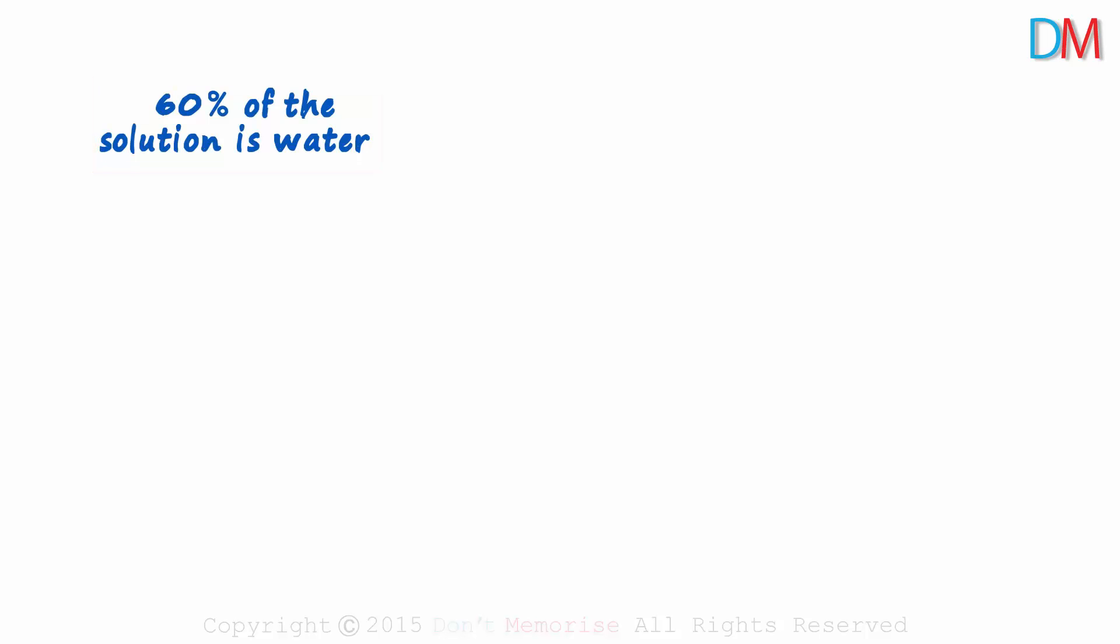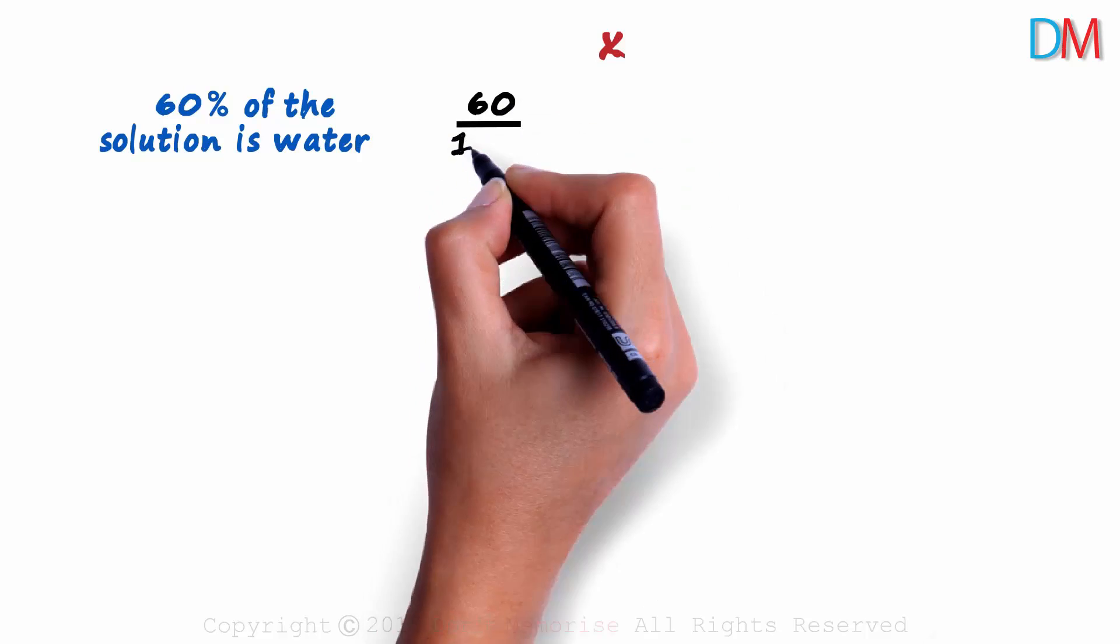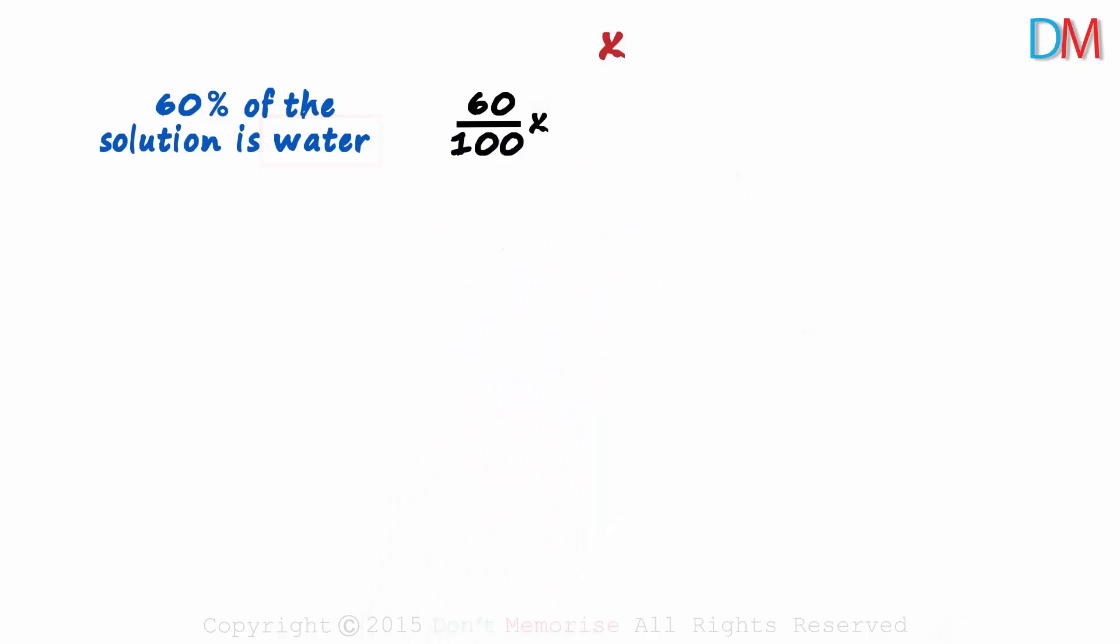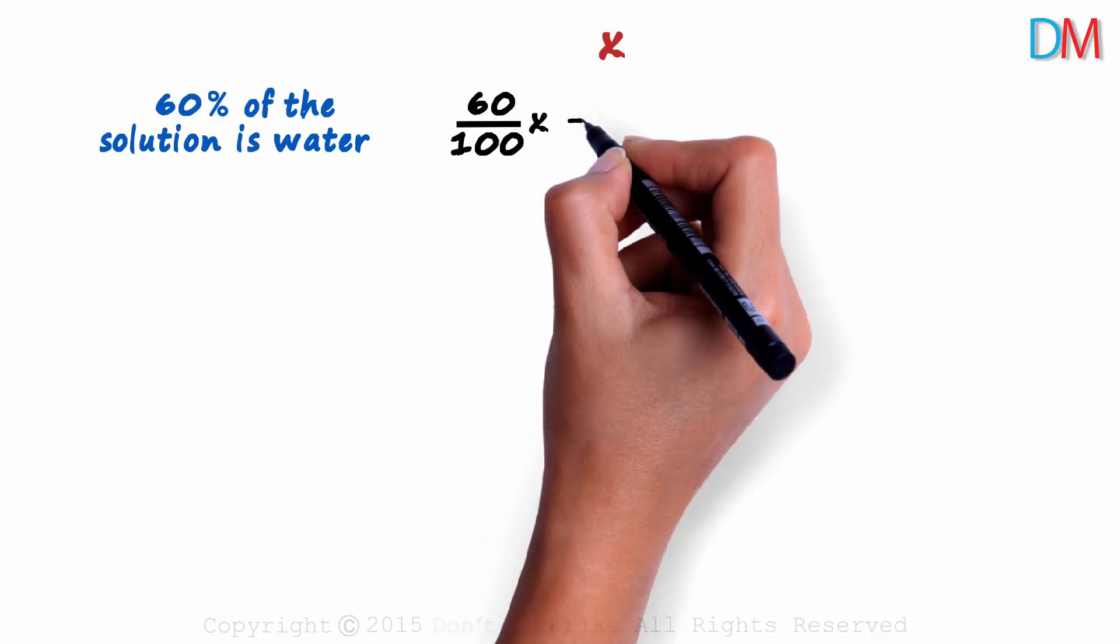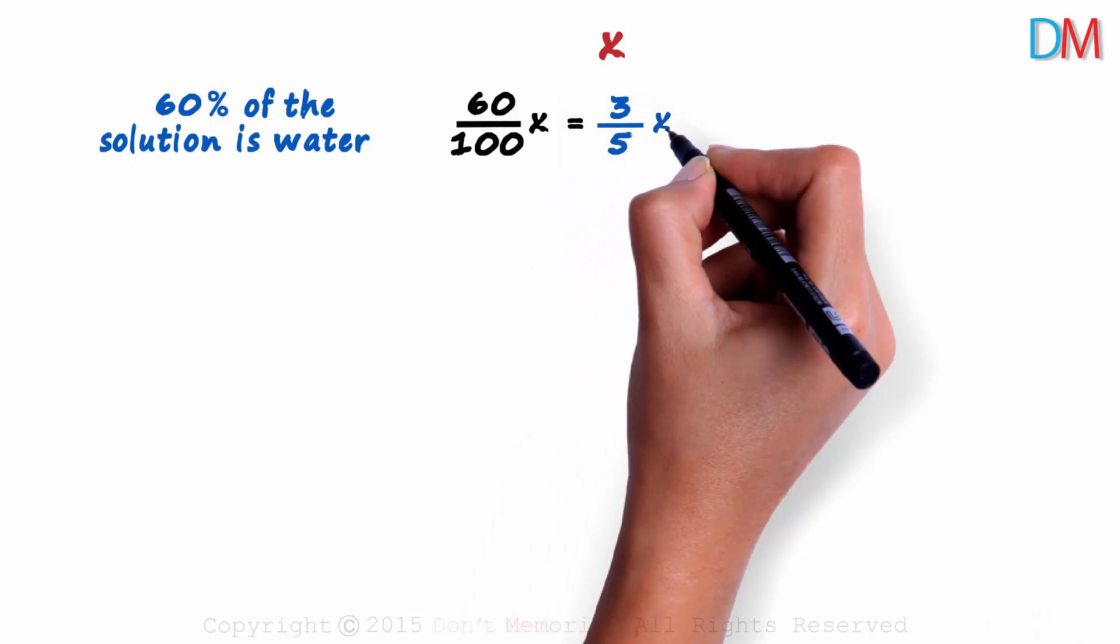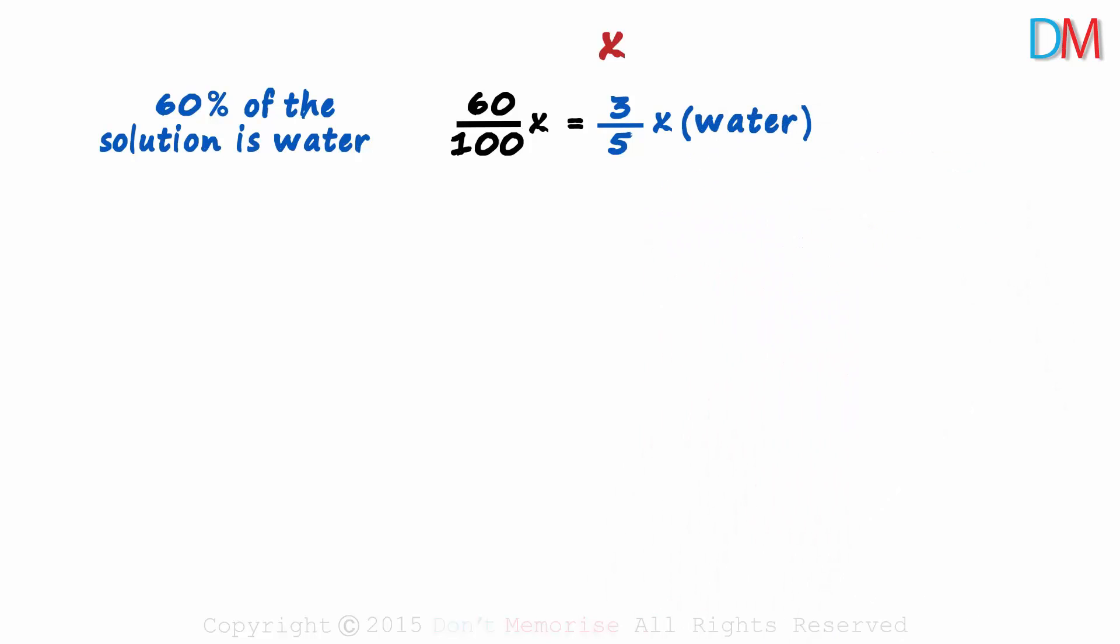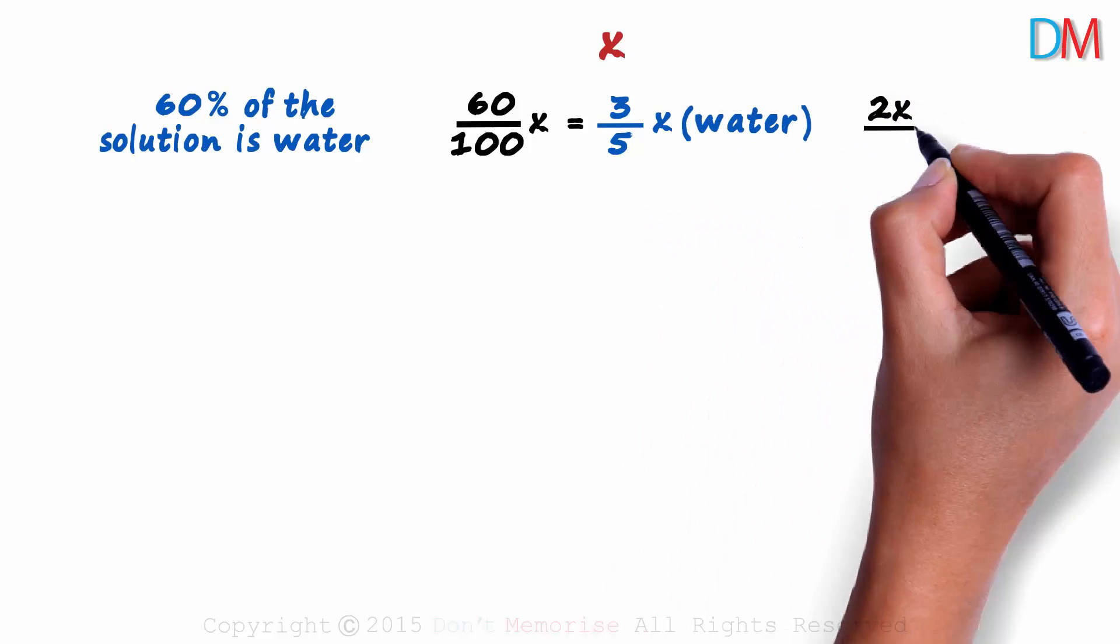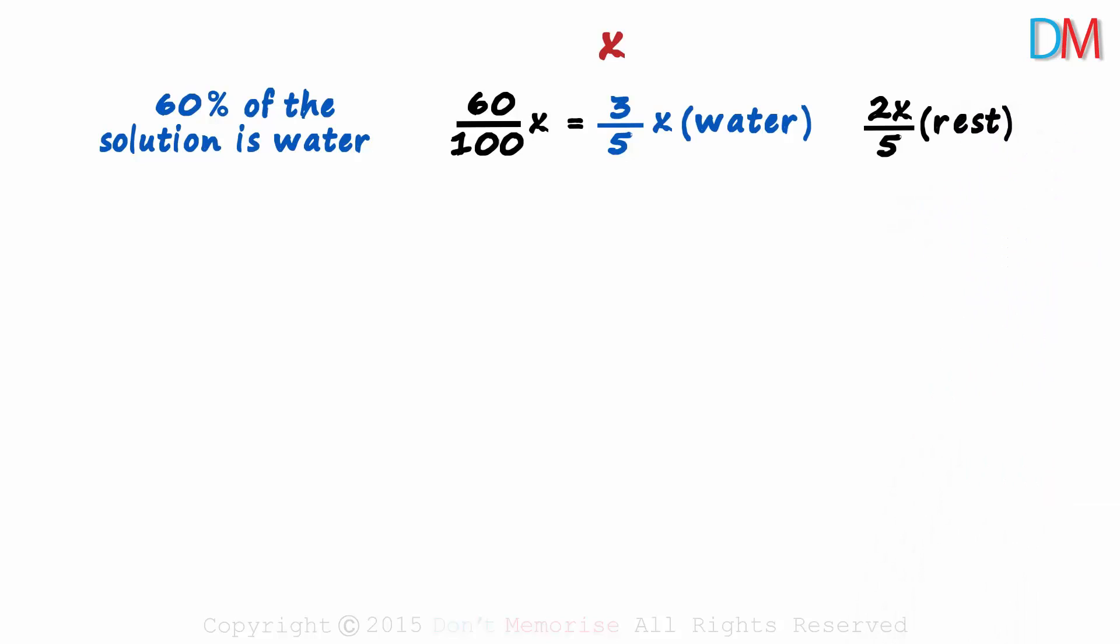Let's say the solution weighs x liters. This tells us that 60% of x will be water. 60 over 100 times x will be the amount of water in this solution. Reducing this fraction to its simplest form, we can say that 3 fifths of the solution is water. And this indirectly tells us that 2 fifths of the solution is the rest. We don't know what the rest is, but 2 fifths of the solution is something other than water.